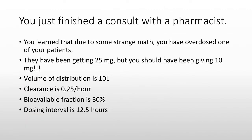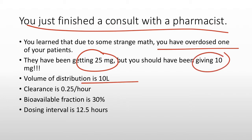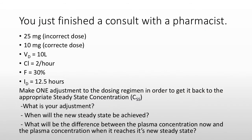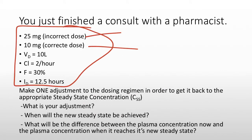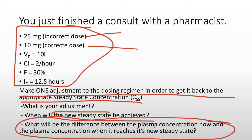Now, a question to lead into the next part: you finished a consult with a pharmacist and learned that due to some strange math, you've overdosed a patient — giving 25 milligrams when they should have gotten 10 milligrams. Volume of distribution is 10 liters, clearance is 0.25 per hour, bioavailable fraction is 30%, and dosing interval is 12.5 hours. What do you do? What adjustment do you make, how long will it take, and what is the change in plasma concentration?